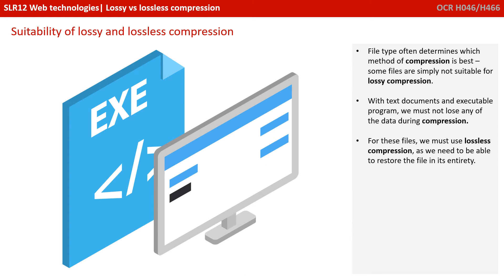File type often determines which method of compression is best, and indeed there are some files which simply are not suitable for lossy compression at all. For example, text documents and executable programmes must not lose any data during the compression process. For these files, we have to use lossless compression, as we need to be able to get back to the original file in its entirety.